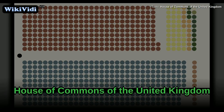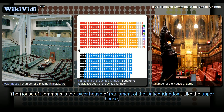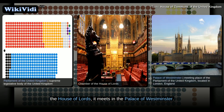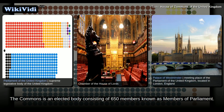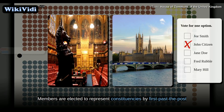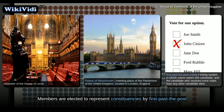House of Commons of the United Kingdom. The House of Commons is the lower house of Parliament of the United Kingdom. Like the upper house, the House of Lords, it meets in the Palace of Westminster. The Commons is an elected body consisting of 650 members known as Members of Parliament. Members are elected to represent constituencies by first-past-the-post and hold their seats until Parliament is dissolved.